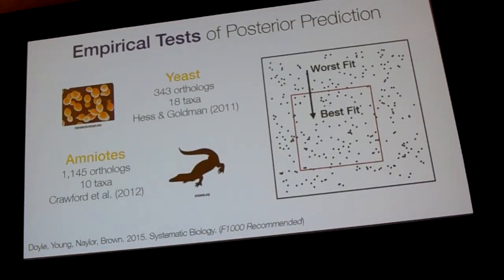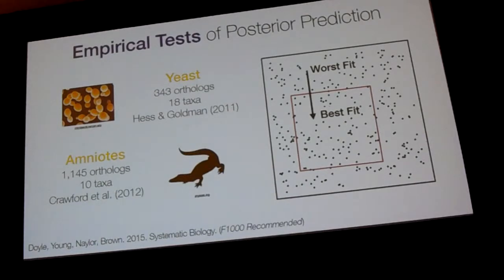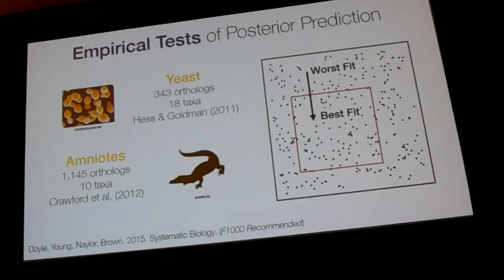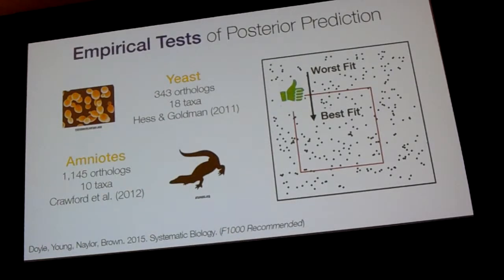To see if this actually accomplishes our goal, we used a couple of empirical datasets where we know something about what the true answer probably looks like. We simply took all of the genes in these datasets, applied posterior prediction, and ranked them based on their fit — then checked whether genes that ranked better actually gave us trees closer to what we think the truth is. I'm going to gloss over a lot of details, but giving you a thumbs up: if you rank genes based on model fit, those that fit our models better give us trees closer to the true answer. That gives us some confidence that what we're doing is at least reasonable.